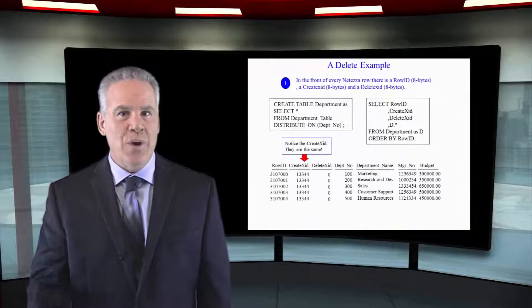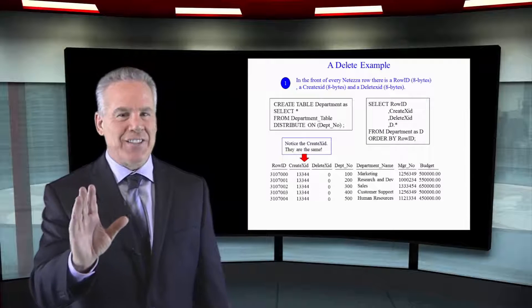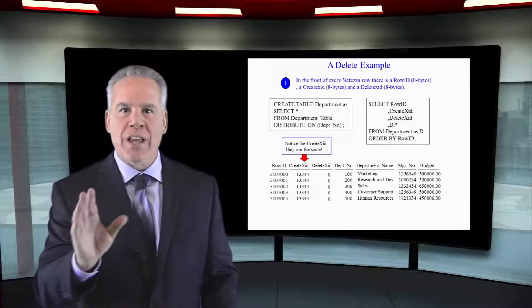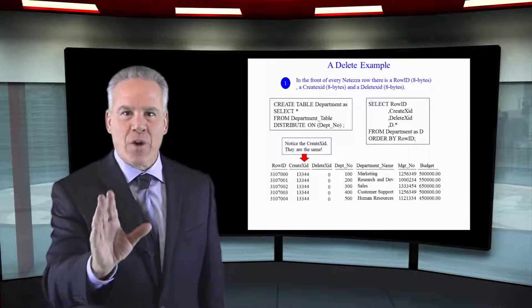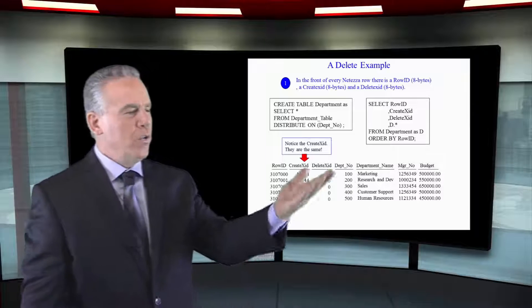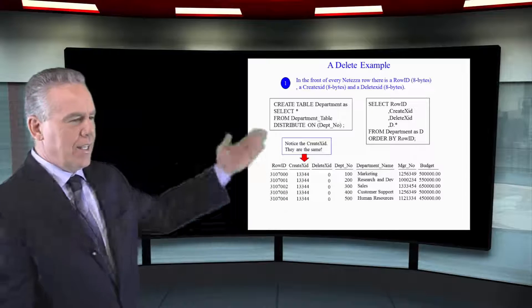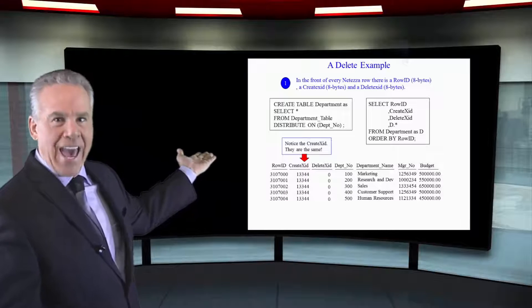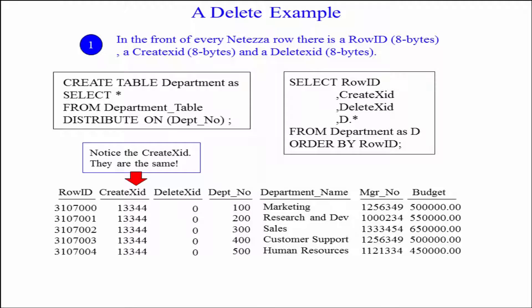I'm going to show you a delete example, but before we do, let's start fresh. We do a create table, department table as, and we select everything from the department table and we're going to distribute on Depno. Our table is created.